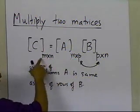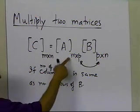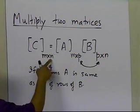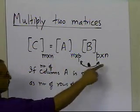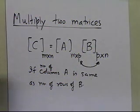The resulting matrix C will have m rows, which is the same as the number of rows in A, and n columns, which is the same as the number of columns in B. So the resulting matrix will be m by n.